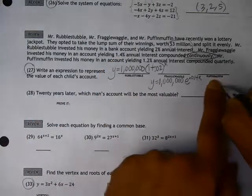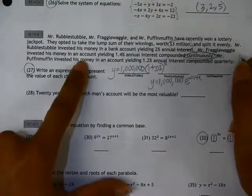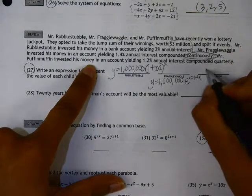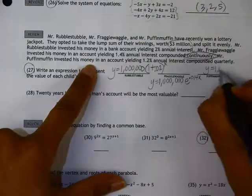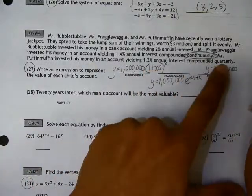The last man, Mr. Puffin-Muffin, invested his money in an account yielding 1.2% interest, compounded quarterly.